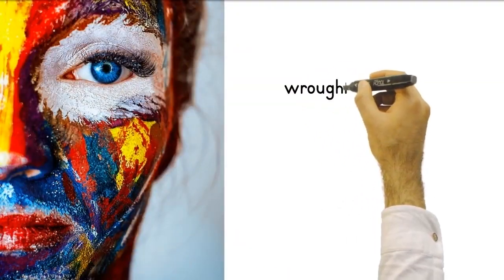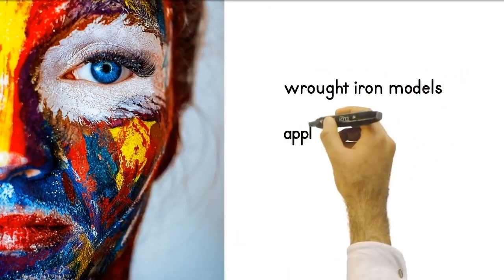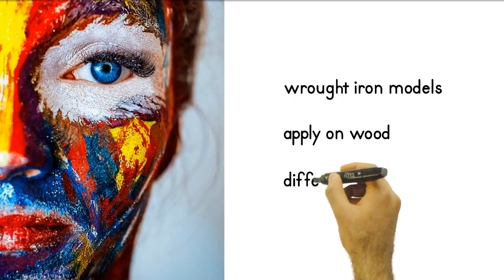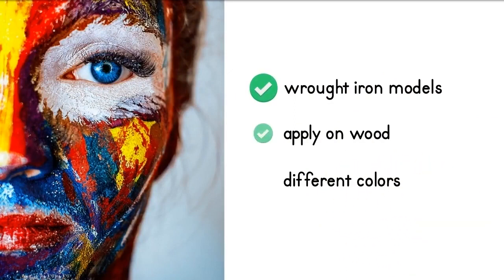Antique paints that you can apply on wrought iron or wood will add value to your products with different color options. Our favorite is the copper color. What about yours?